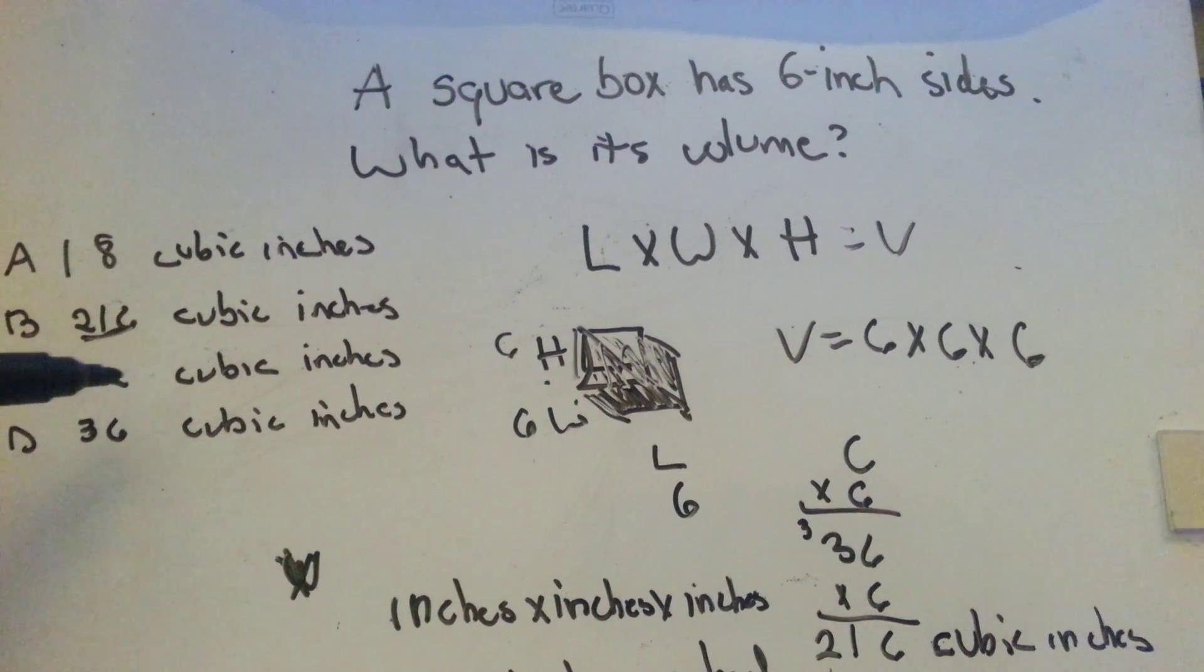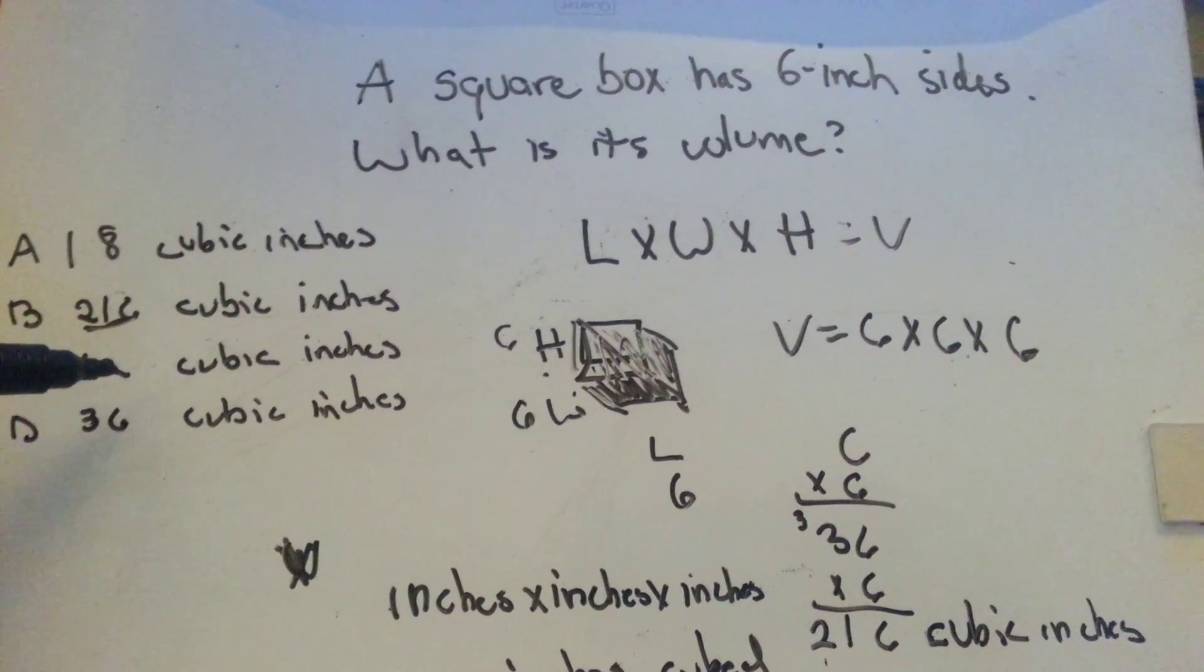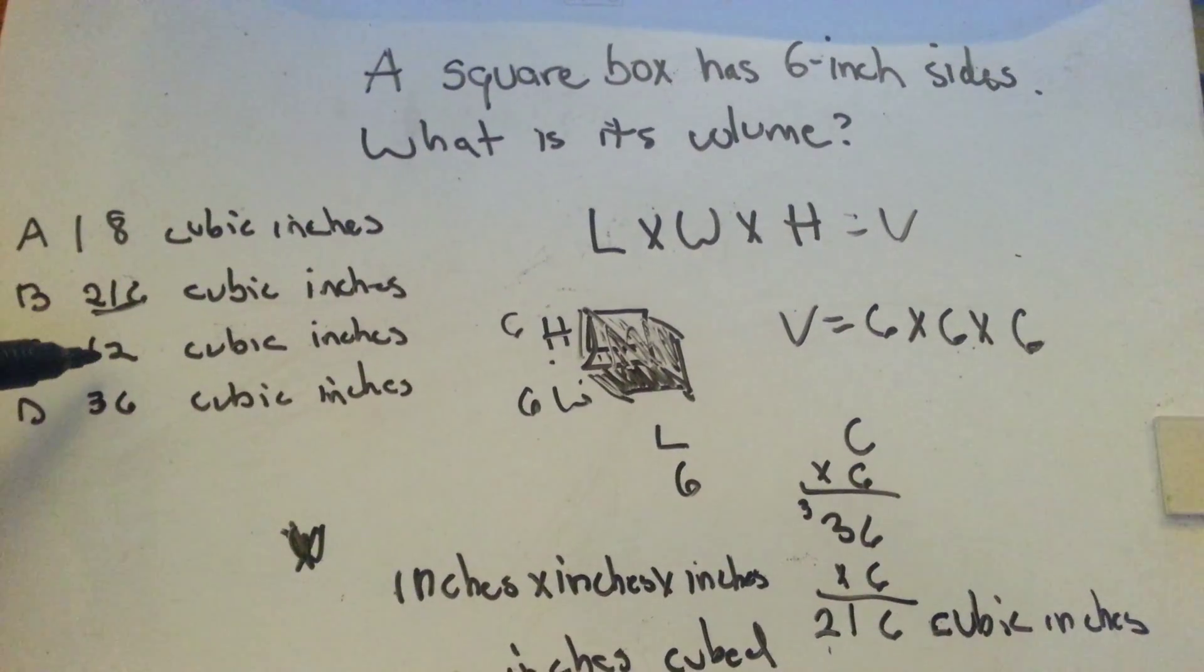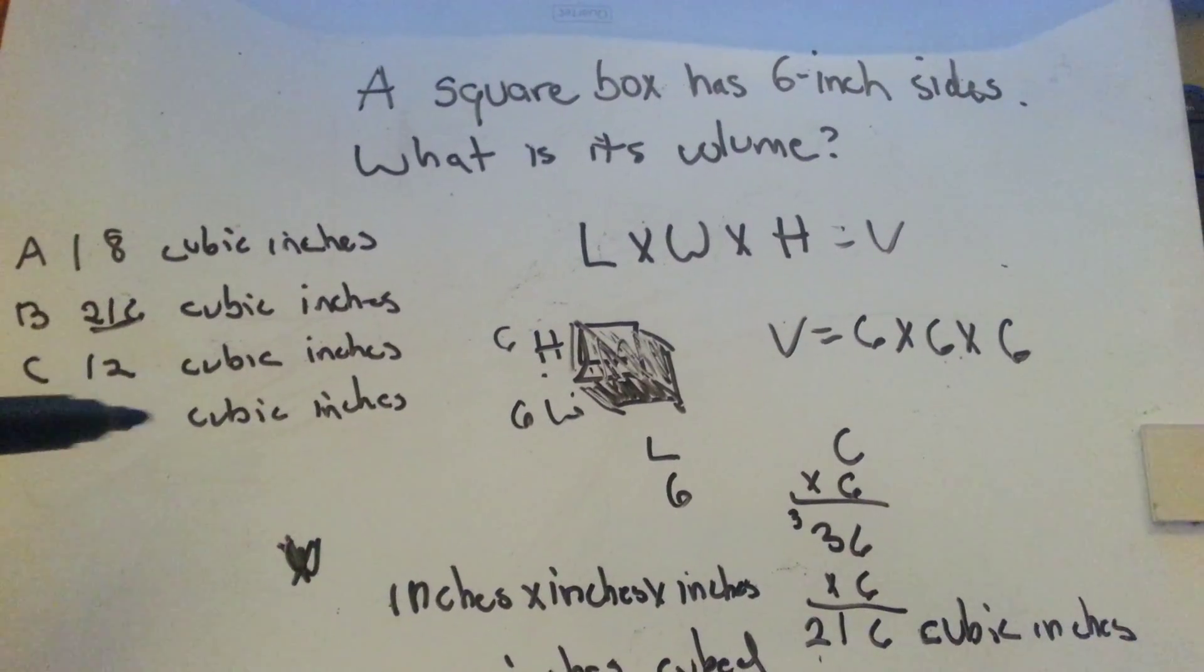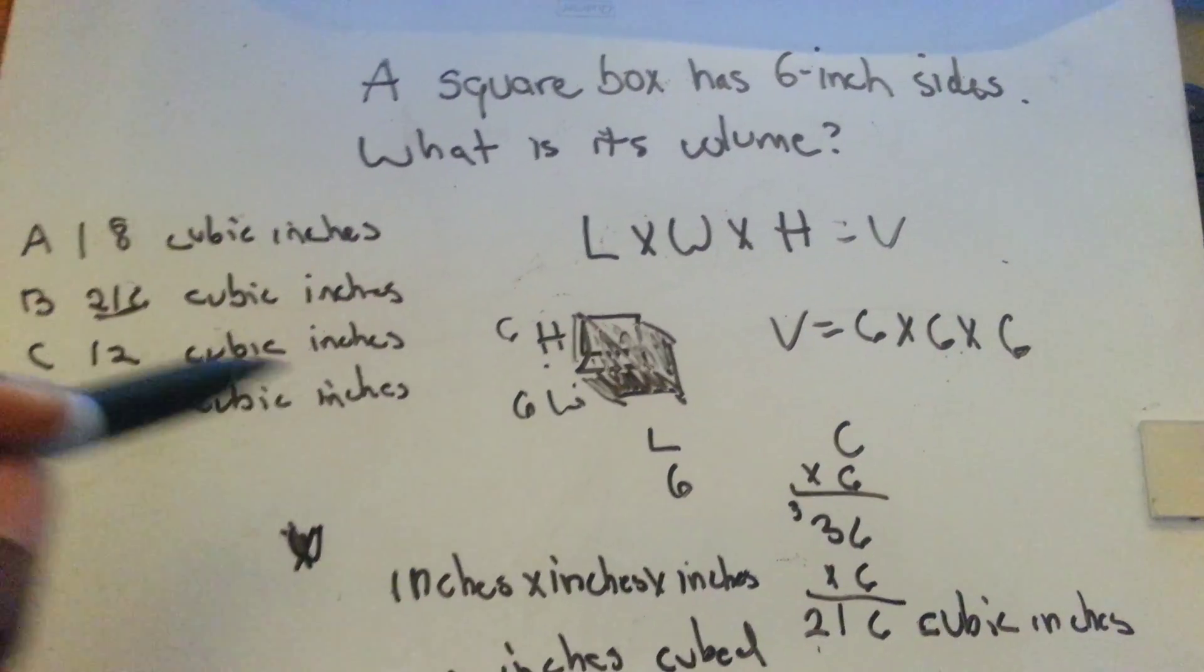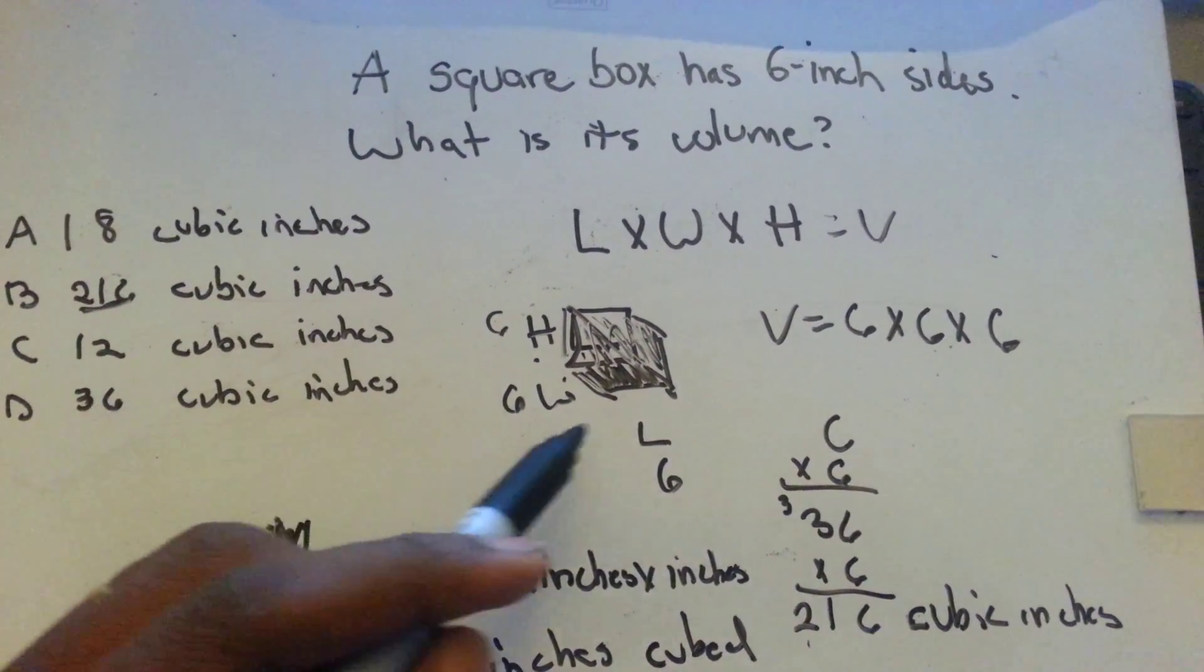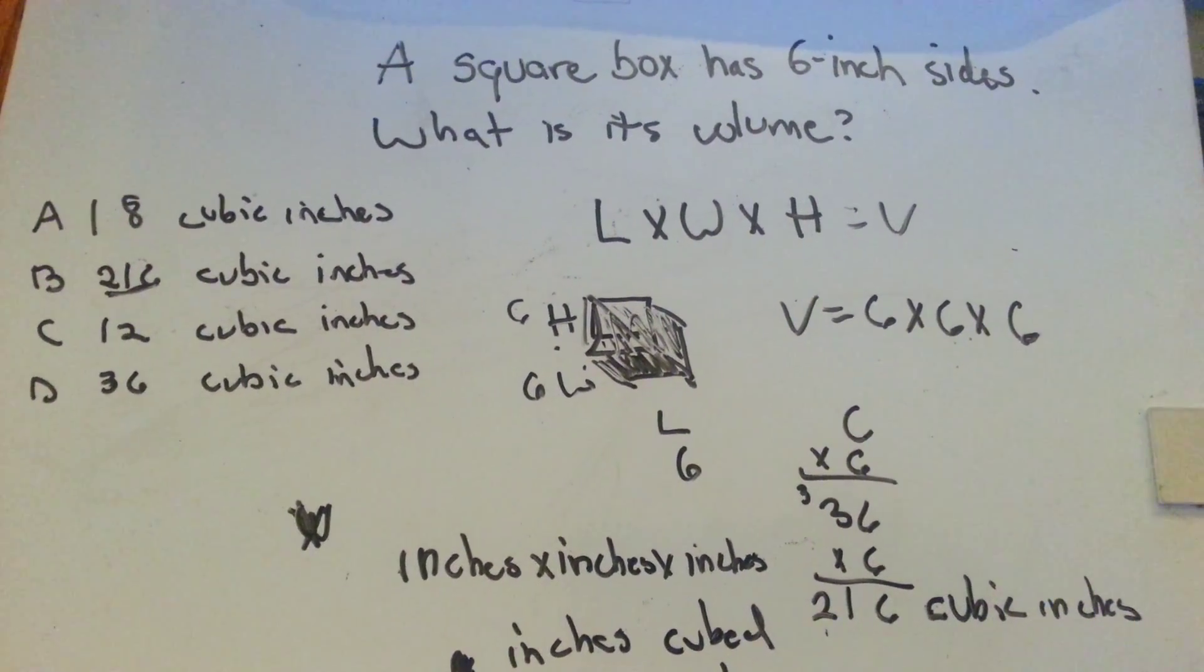If you use the wrong formula and you used area instead of volume and you added them instead of multiplying them, you did six plus six instead of six times six, then you'd come up with twelve cubic inches. And if you just multiply the two dimensions length and width which is the area, then you'd come up with thirty-six inches instead of multiplying all three which would be six times six times six and come up with the correct answer of 216.